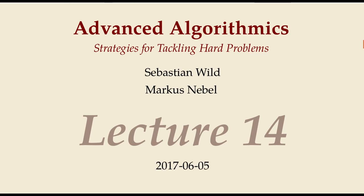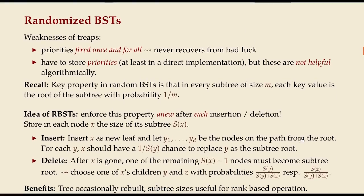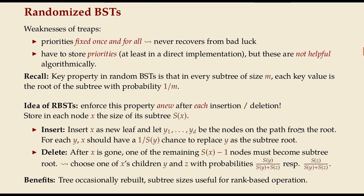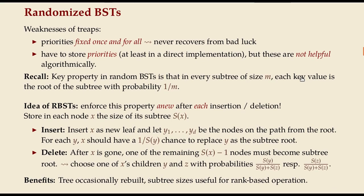Welcome to another session of advanced algorithms. Last time we had to stop in the middle of the discussion of randomized binary search trees. I left the slide with the spines in the collection because we need that later on. So at the beginning last time we saw that random binary search trees are well behaved. If the input is randomly ordered then they are close to optimally balanced, even in a with-high-probability sense, and we saw two ways how to enforce this shape of the trees even if we can't rely on a good insertion order.